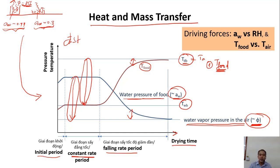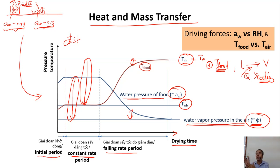During the constant rate period, free water evaporates from the surface. Liquid water evaporating into vapor absorbs energy — it takes heat from the air. This evaporation produces a cooling effect. When water evaporates freely from the food, it cools the food down. This is why the food temperature does not rise — it stays at the wet bulb temperature.